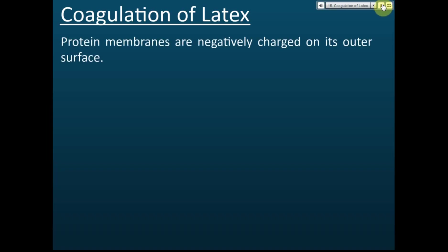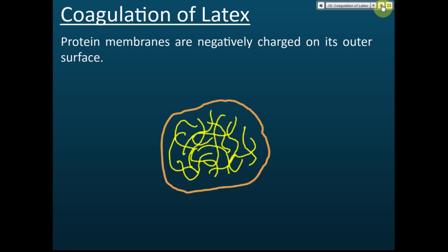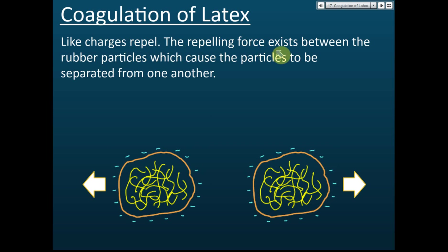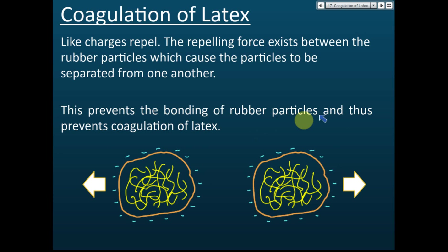The protein membranes are negatively charged on their outer surface. Since all the rubber particles carry the same negative charge, they repel each other. This repelling force keeps the particles separated from one another. Because they don't get close, they exist in liquid form — this prevents the bonding of rubber particles and thus prevents the coagulation of latex.